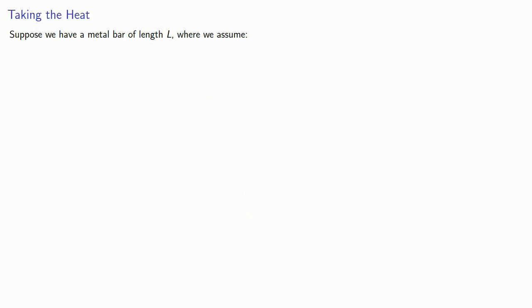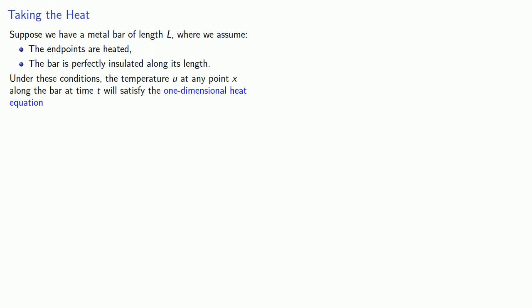Suppose we have a metal bar of length L, where we assume that the endpoints are heated. The bar is perfectly insulated along its length. Under these conditions, the temperature U at any point X along the bar at time T will satisfy the one-dimensional heat equation, where alpha is a physical constant assumed to be real.